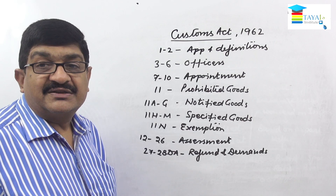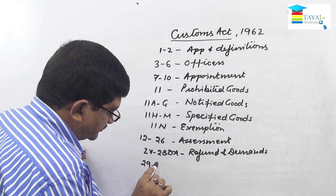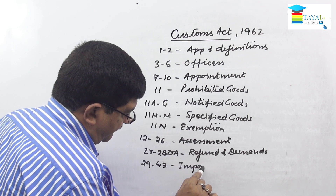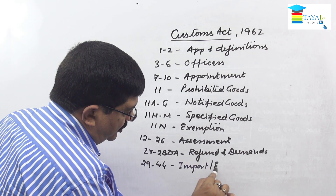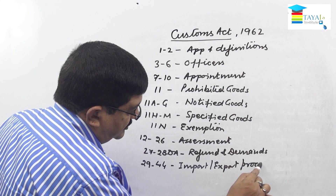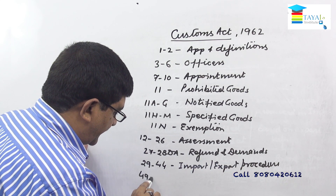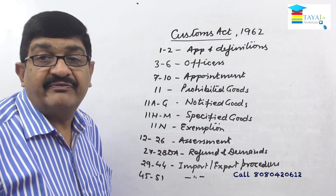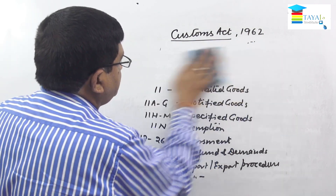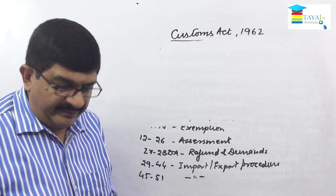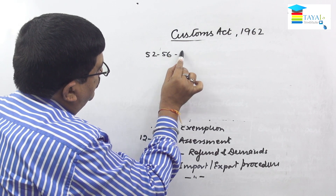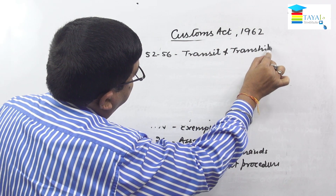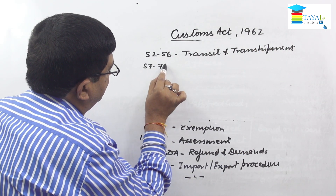Sections 29 to 44 cover import-export procedure. Sections 45 to 51 are a continuation covering different ways of handling goods. Sections 52 to 56 cover transit and transshipment. Sections 57 to 73 cover warehousing. Sections 74 to 77 cover duty drawback.